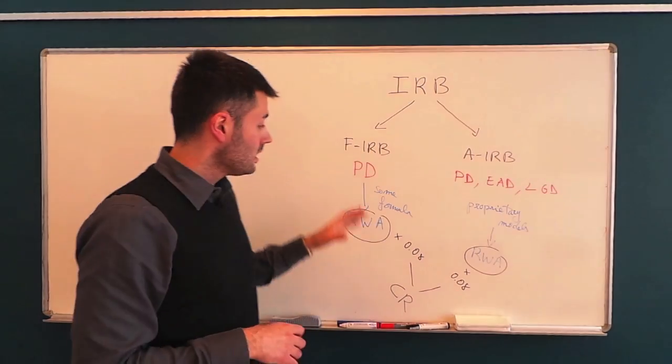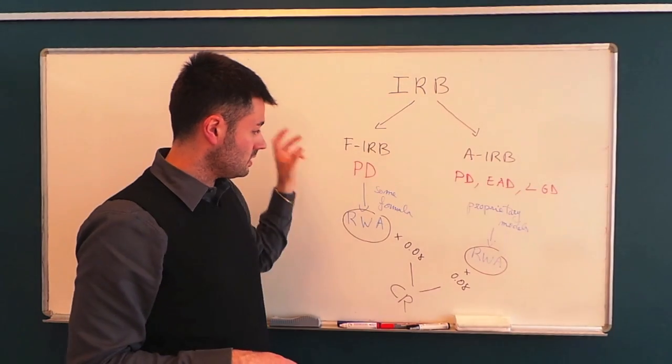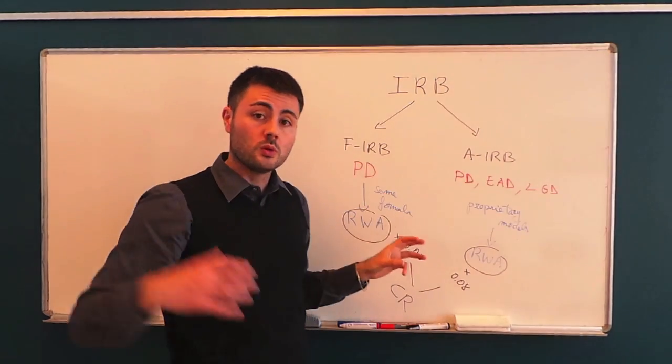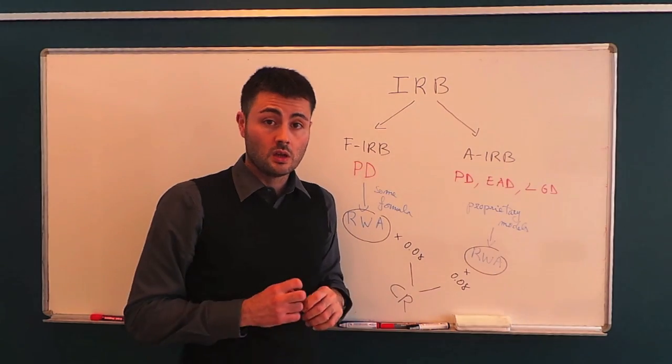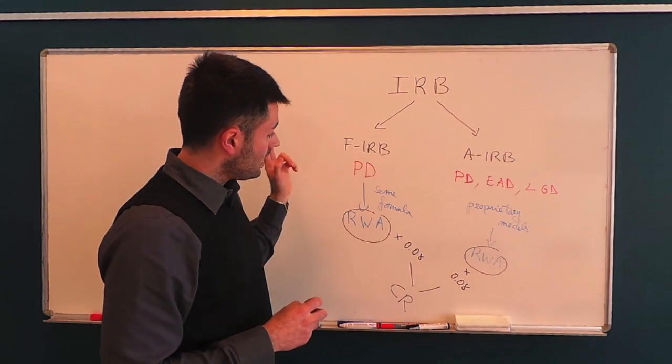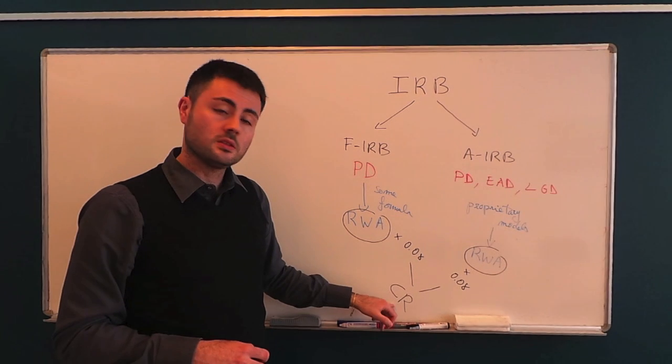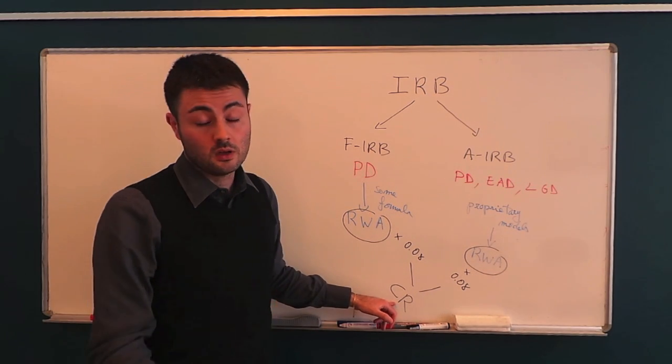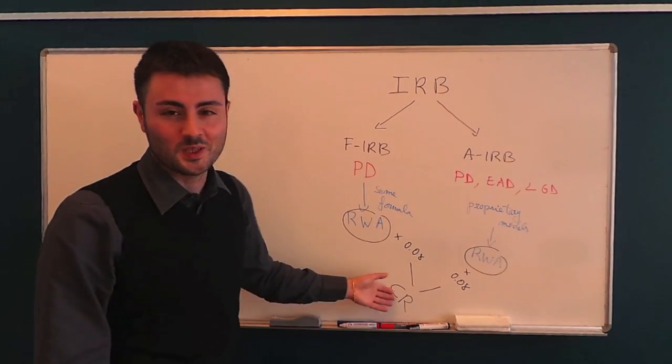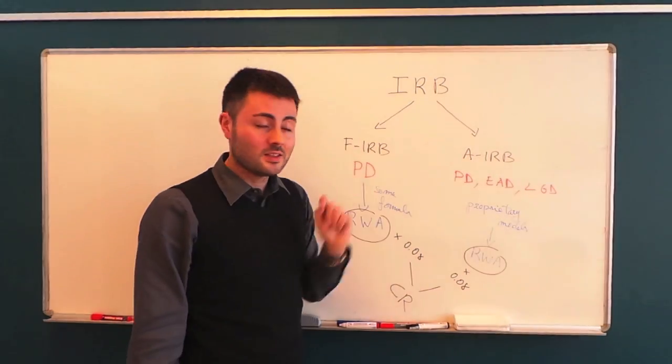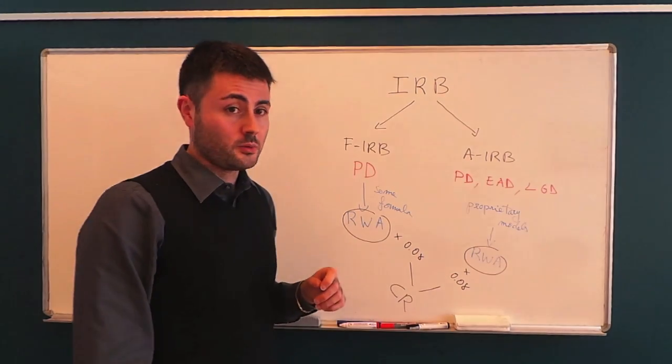But once they have this guide, they just plug in the probability of default within some formula, which is provided by the Basel Committee on Banking Supervision. And that's it. They have the risk weighted assets, 8% credit risk. Sorry, capital requirements for credit risk.